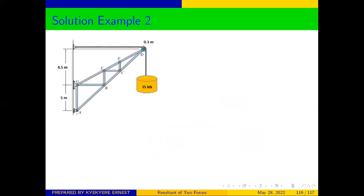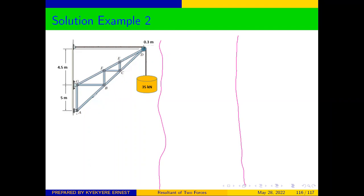Solution. We have been given this question and are asked to find the tension in the rope and the reactions at the support. Anytime you are given a question like this, the first thing you need to do is draw the free body diagram. We have our structure like this, moving up like that.